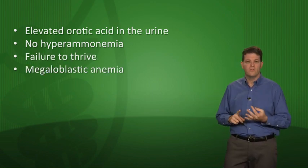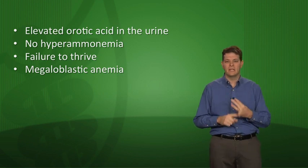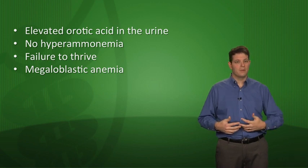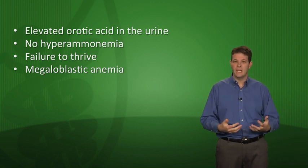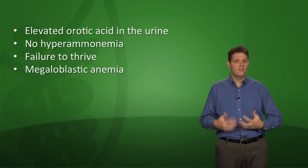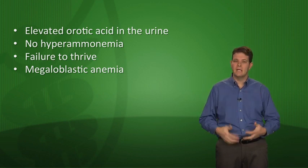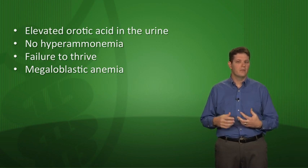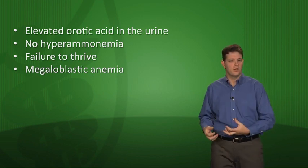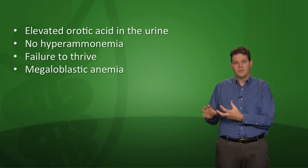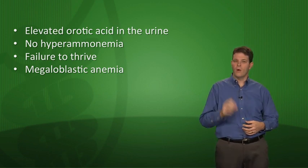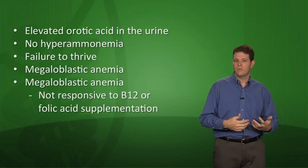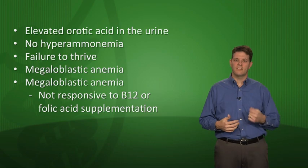These patients also have megaloblastic anemia — they can't make UMP or pyrimidines, which is a problem for rapidly dividing cells like hematopoietic cells. This is an unusual cause of megaloblastic anemia; most commonly it's due to B12 or folate deficiency, which blocks the tetrahydrofolate part of the pyrimidine pathway. With orotic aciduria, the problem is not B12 or folate, so it's megaloblastic anemia not responsive to B12 or folic acid supplementation.